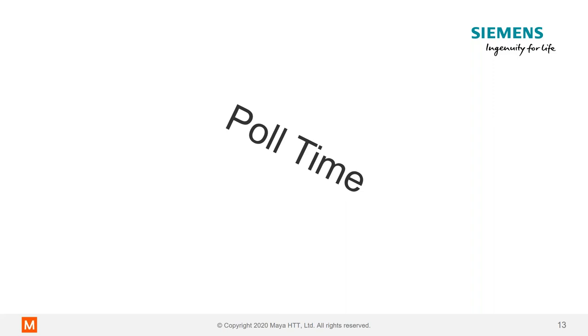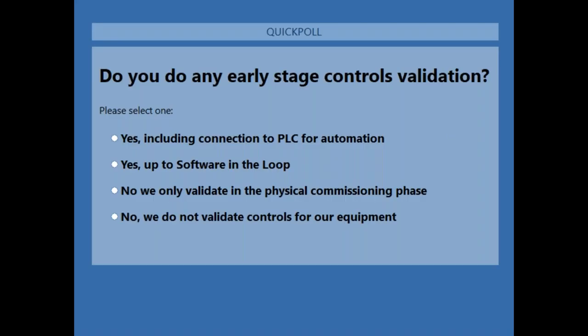This is an interactive webinar, so we have our first poll. We want to understand how you're doing early-stage control validation. The poll options are: yes, including connection to PLC for automation; yes, up to SIL or software-in-the-loop; no, we only validate in the physical commissioning phase; or no, we do not validate controls for our equipment. Please go ahead and select your answer.